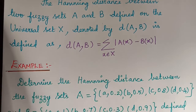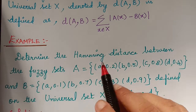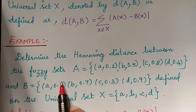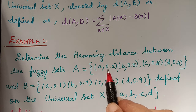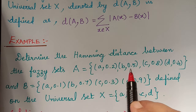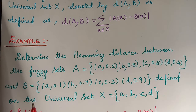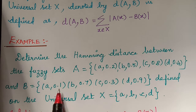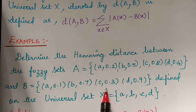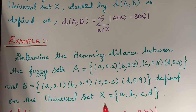Now here we have an example to understand this concept better. Determine the Hamming distance between fuzzy set A given as: element a with membership grade 0.2, b with membership grade 0.5, c with 0.8, and d with 0.4; and fuzzy set B given as: a with membership grade 0.1, b with 0.7, c with 0.3, and d with 0.9; defined on universal set capital X = {a, b, c, d}.